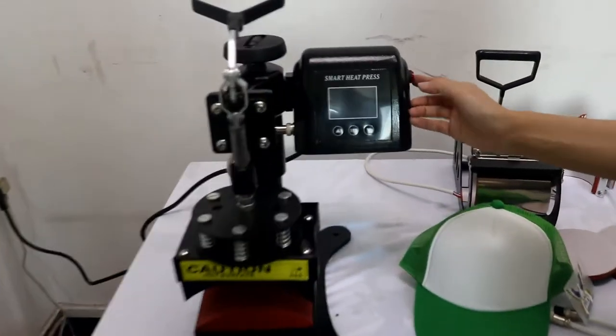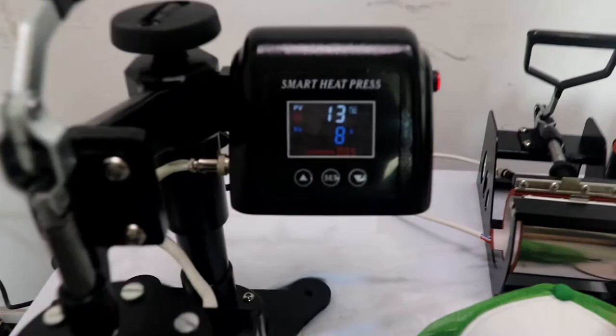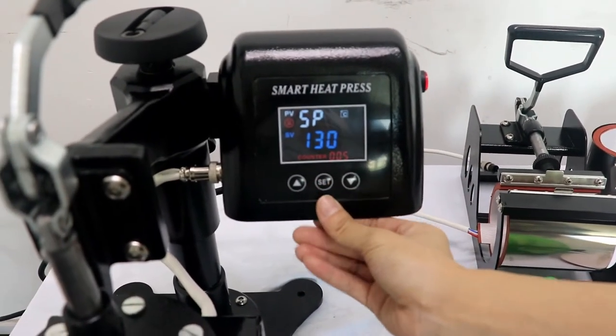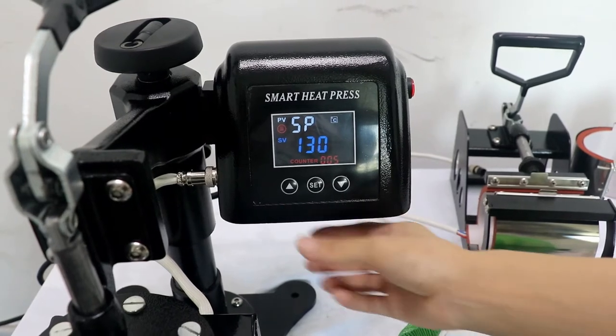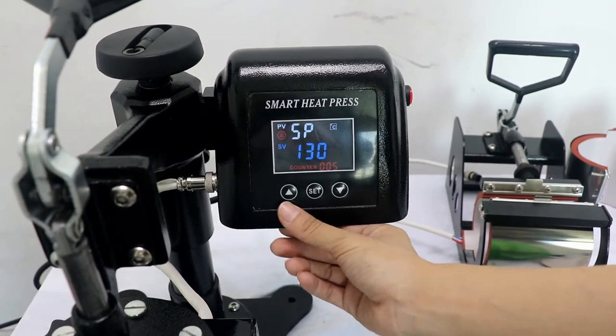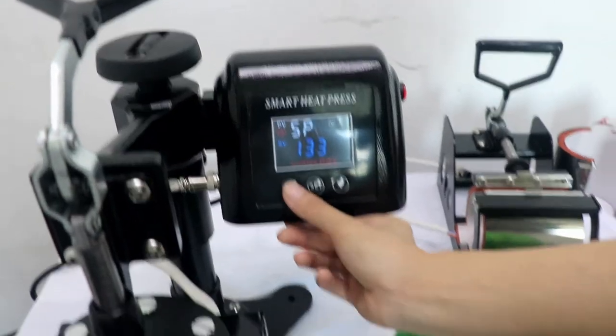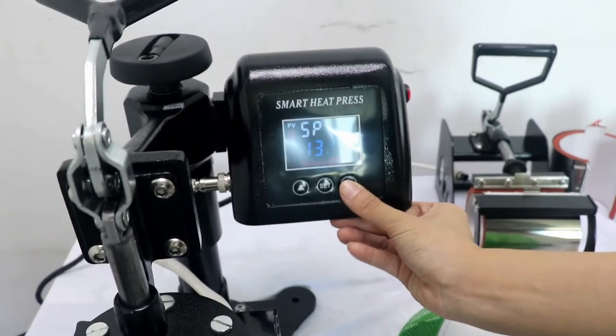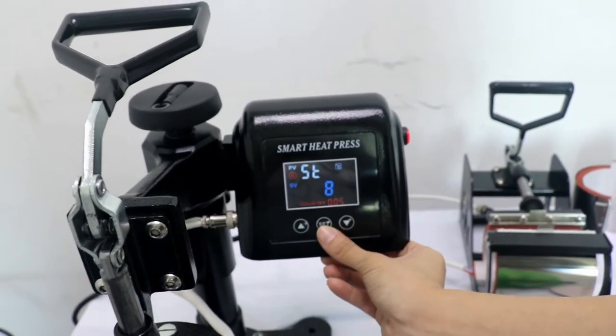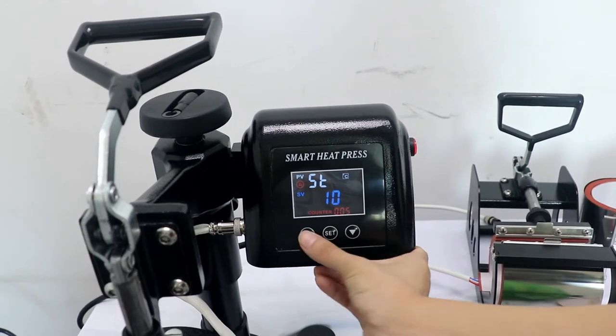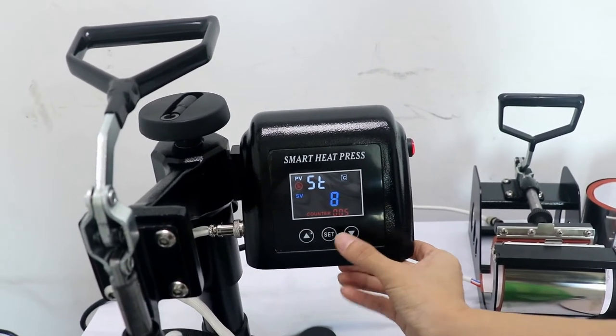First, we turn on the power. We adjust the temperature and the time. First, we press this 5P, means temperature setting mode. Normally, we use 130 degrees for sublimation transfer for the cap. Okay. And then, the time normally we use 8 seconds. You could adjust it freely. Okay.